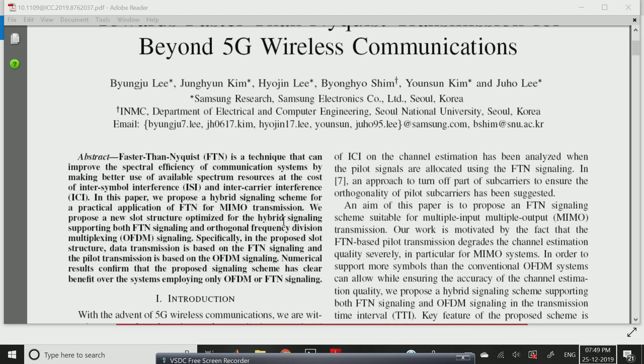In this proposed slot structure, data transmission is based on the FTN, that is the Faster-Than-Nyquist technique signaling, and the pilot transmission is based on the OFDM signaling. OFDM is orthogonal frequency division multiplexing signaling scheme. The OFDM scheme can forward more number of data within signaling analysis. Numerical results confirm that the proposed signaling scheme has clear benefit over the systems employing only OFDM or FTN signaling. This is the abstract for the 5G wireless communication paper.